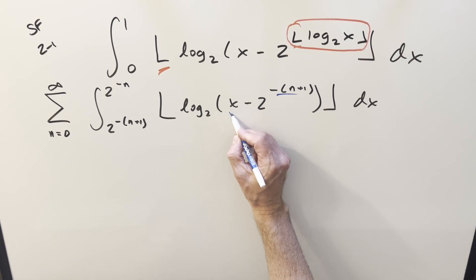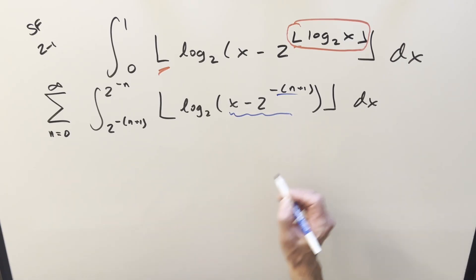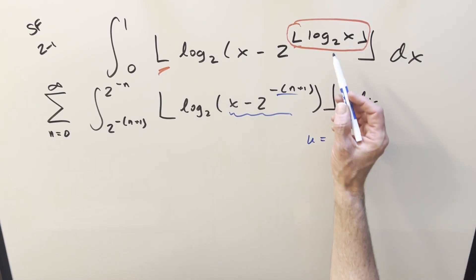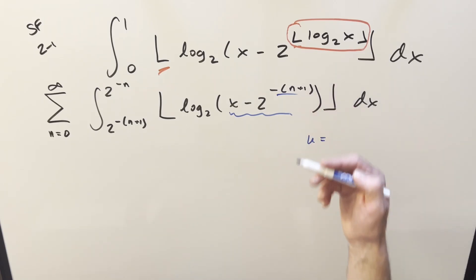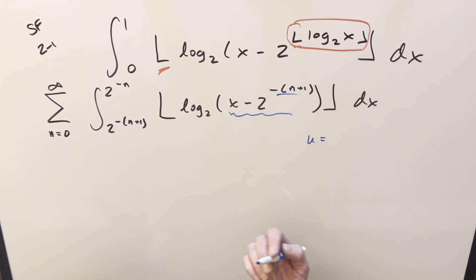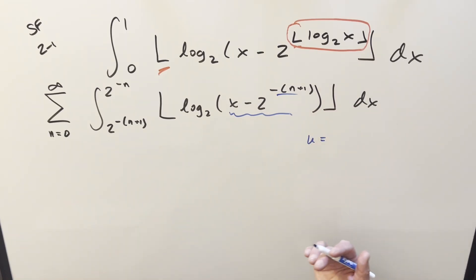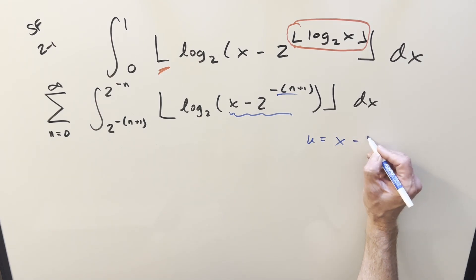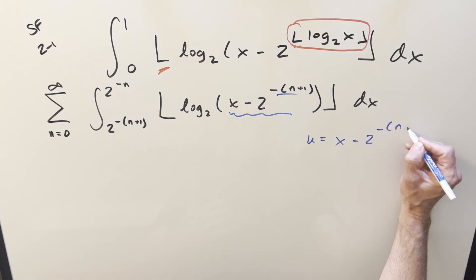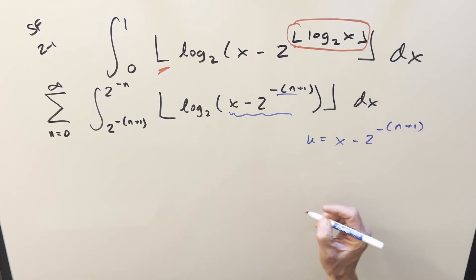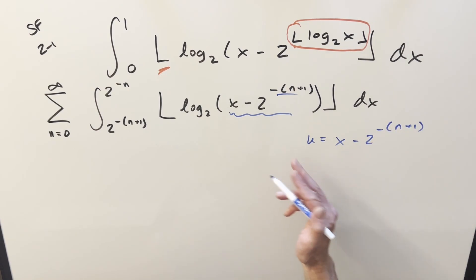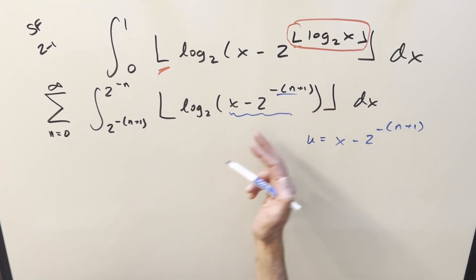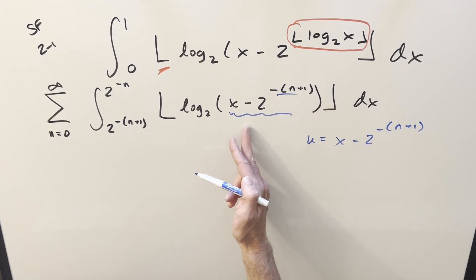Next, what I want to do is a u-substitution on this part — just the inner part, not the whole thing. You could do substitutions all the way through to simplify the floor, but it's kind of a matter of taste because it complicates other things. So I decided it wasn't worth it for me, but you might like it. When we take the derivative for our substitution, everything over here is a constant, so we get du equal to dx. We can also rewrite the substitution as u equal to x minus 1 over 2 to the n, using the negative exponent.